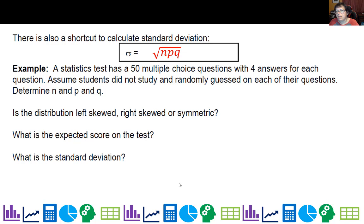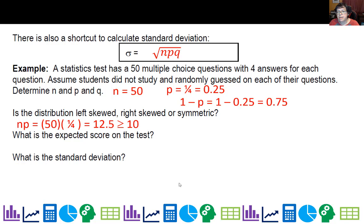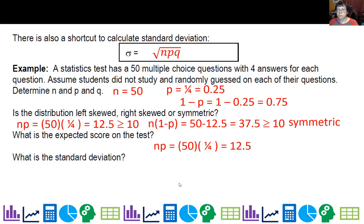Determine n, p, and q. n is 50, p is 0.25, and 1 minus p is 0.75. We calculate np = 12.5 and n(1-p) = 37.5, so we met the condition for it to be symmetric. The expected score is 50 times one-fourth, which equals 12.5, and the standard deviation is 3.06.